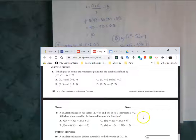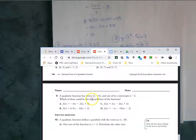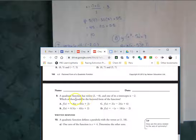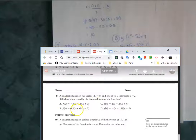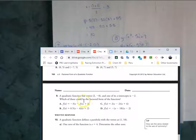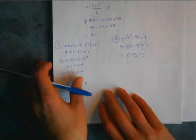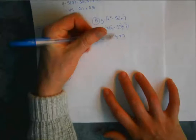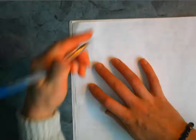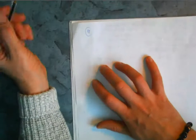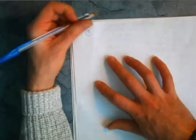Number 9: a quadratic function has a vertex at (2, negative 8), and one of its x-intercepts is at negative 2. We need to determine which factored form is correct. What I like to do with these questions is sketch out the graph when given points, so I can start to visualize what's going on. So we have x equals 2 and y equals negative 8 for the vertex, and we need to go down. One x-intercept is at negative 2.